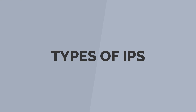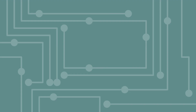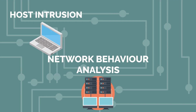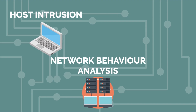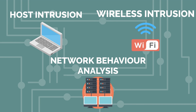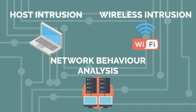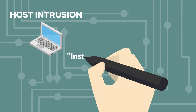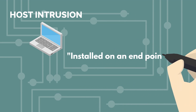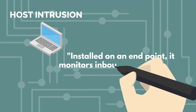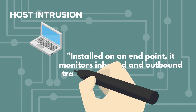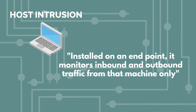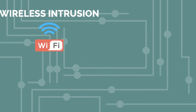Types of IPS are post-intrusion, network behavior analysis, and Wi-Fi intrusion prevention. Post-intrusion prevention system is installed on an endpoint that monitors inbound and outbound traffic from the machine only.